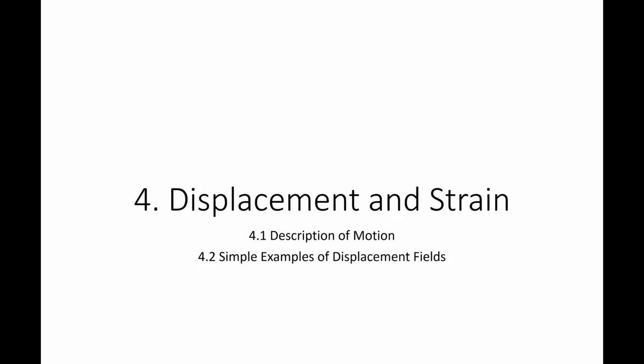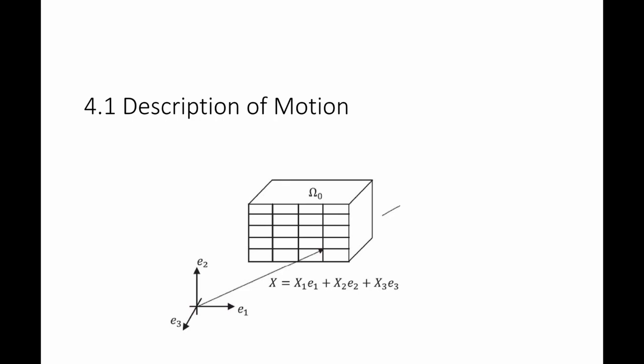In this video, we are going to cover section 4.1, the description of motion, and section 4.2, simple examples of displacement fields. An object is described mathematically by the set of vectors that represent its material points. The picture in front of you shows an object embedded in R3, and every point on the object is represented by a vector X, with components x1, x2, and x3. The set of points is denoted omega naught, and this is called a configuration of the object.